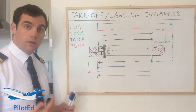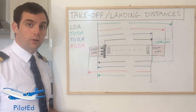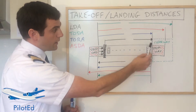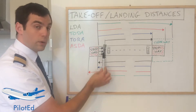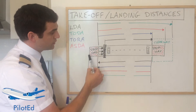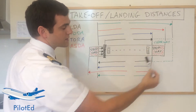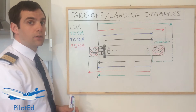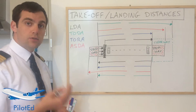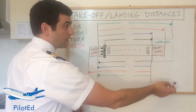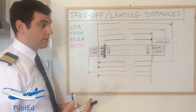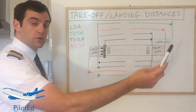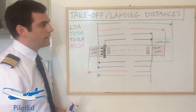If our takeoff distance is going to be larger than the takeoff distance available, we can't take off. I've drawn a diagram — I think this is the easiest way to understand it. We have a runway with threshold markings, a displaced threshold on one side, two stopways, and a clearway on one side. The stopways can only be used in an emergency situation to stop the aircraft; they cannot be used for takeoff roll or landing distance calculations. The clearway can be used for takeoff distance calculations. Many runways nowadays don't have stopways but do have clearways.